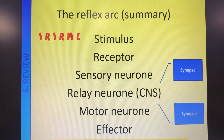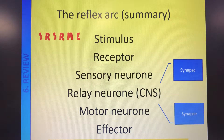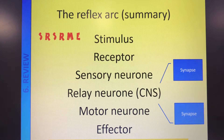We can remember this as a summary using the mnemonic SR SRME: Stimulus, Receptor, Sensory neuron, Relay neuron (which is in the central nervous system), Motor neuron, and Effector. The effector brings about a response, and the response is to get you away from that stimulus - to get you away from the danger.